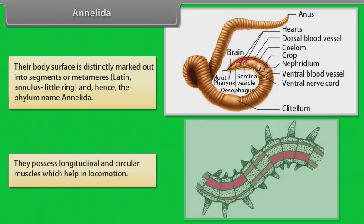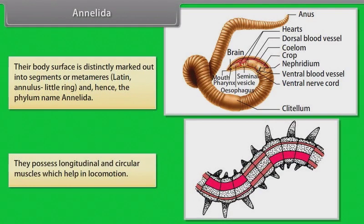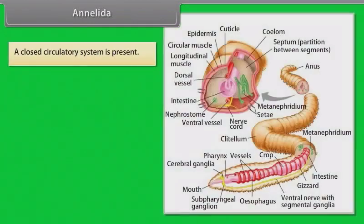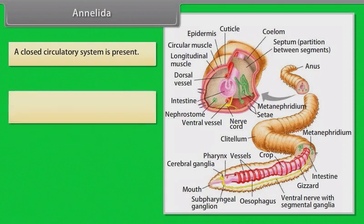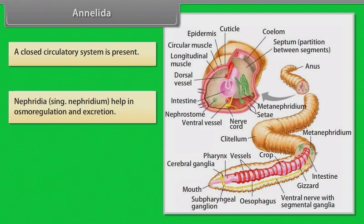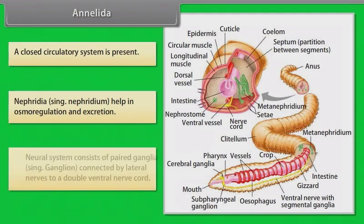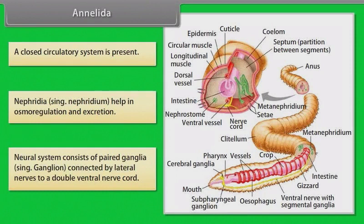They possess longitudinal and circular muscles which help in locomotion. A closed circulatory system is present. Nephridia (singular: nephridium) help in osmoregulation and excretion. The neural system consists of paired ganglia (singular: ganglion) connected by bilateral nerves to a double ventral nerve cord.